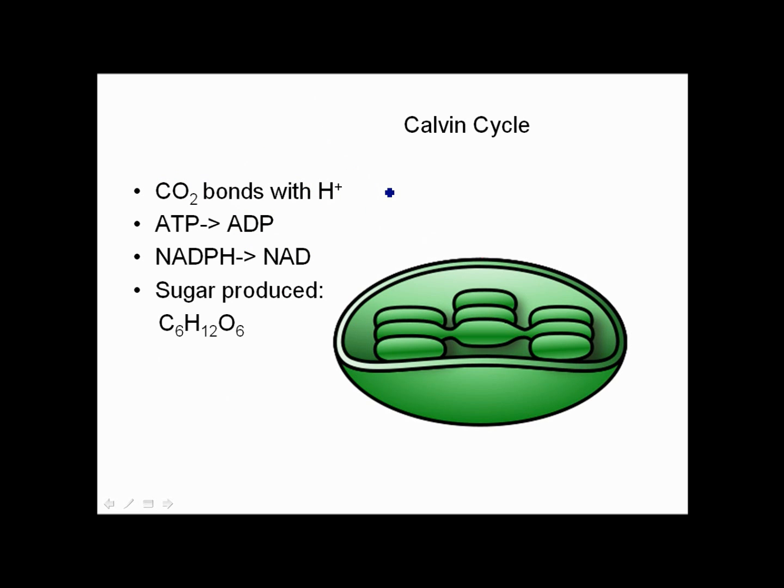Now let's look at the Calvin cycle. Remember the Calvin cycle takes place not in the thylakoid membranes but just in the space inside the chloroplast. So now this is where the carbon dioxide comes in. As you know, plants absorb carbon dioxide from the atmosphere so that CO2 carbon dioxide forms chemical bonds with the hydrogen. Remember in the light reactions we separated hydrogen from oxygen splitting up the water. Now you've got this free hydrogen that's going to bond with the carbon dioxide.